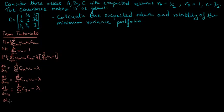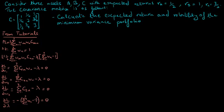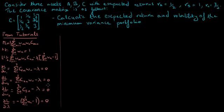Finally, taking the derivative with respect to the parameter lambda, we get a minus of the sum of weights of all assets minus 1. Then we set all these equations equal to 0 in order to solve for the weights that would minimize the portfolio variance subject to the given constraint. Following the methodology described in tutorials, we will put these equations in matrix form and plug in the values of variances and covariances given to us, giving us the following matrix representation.